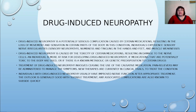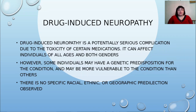Drug-induced neuropathy can affect individuals of all ages and both genders. However, some individuals may have a genetic predisposition and may be more vulnerable than others. There is no specific racial, ethnic, or geographic predilection observed. An individual is more at risk if medications potentially toxic to the body are used, or if there is a known metabolic or genetic predisposition to certain drugs.